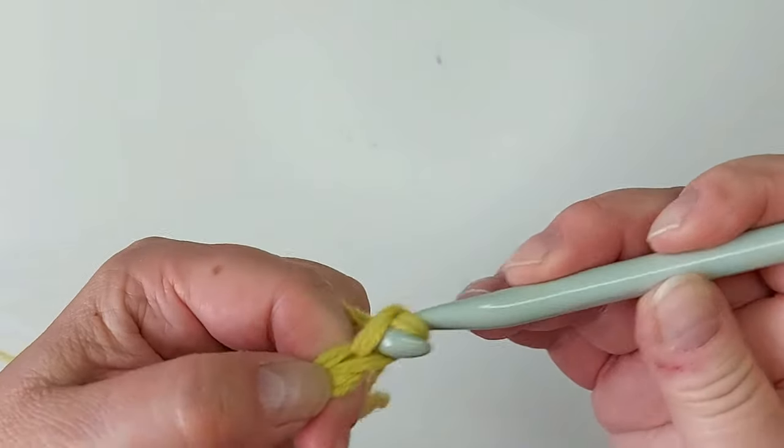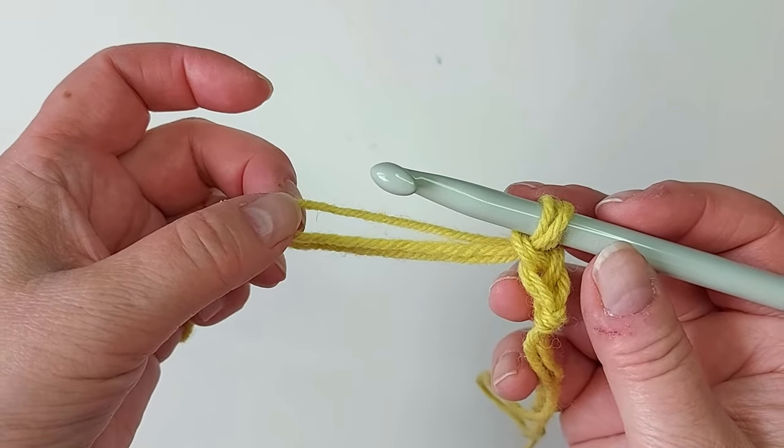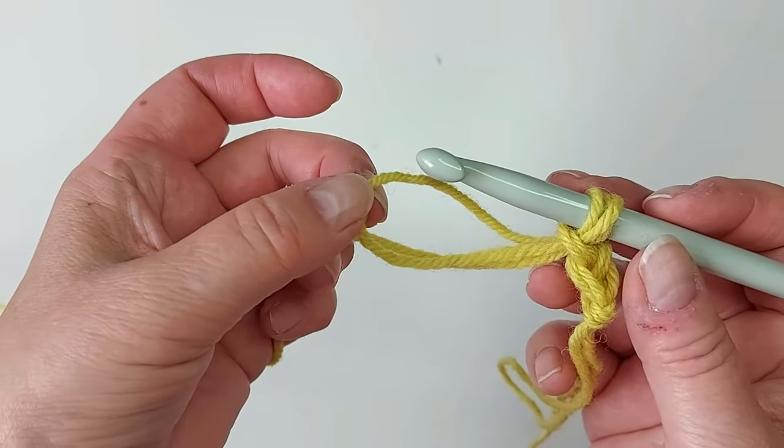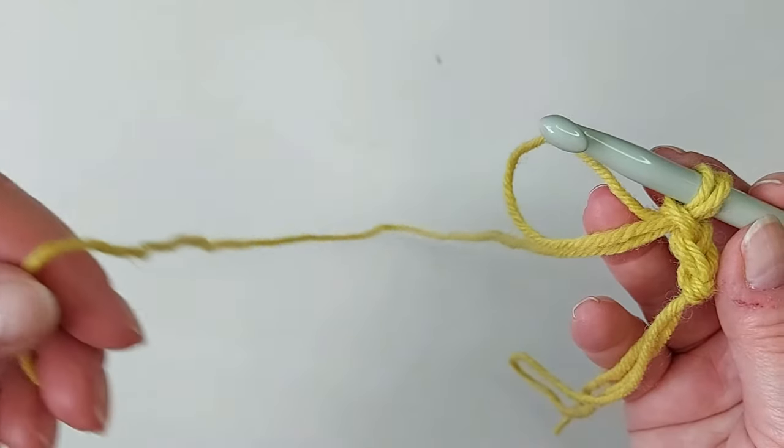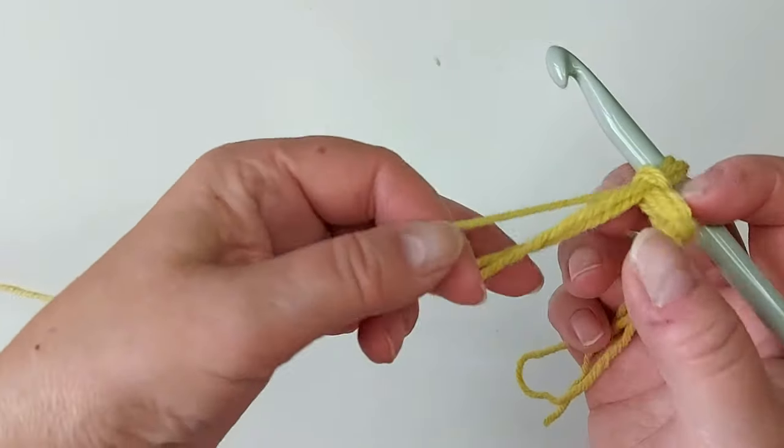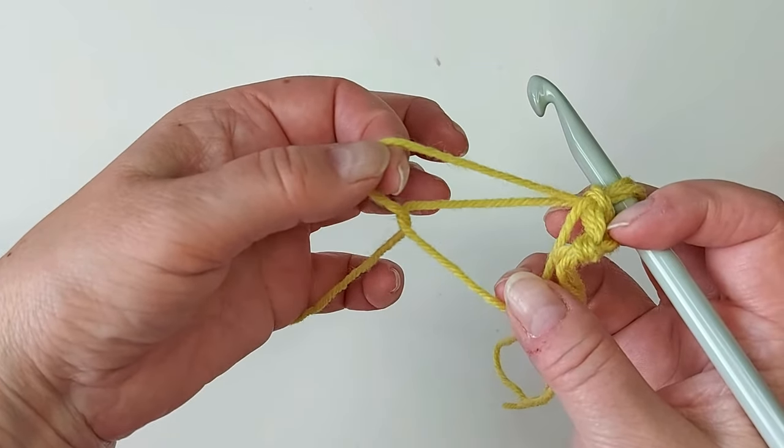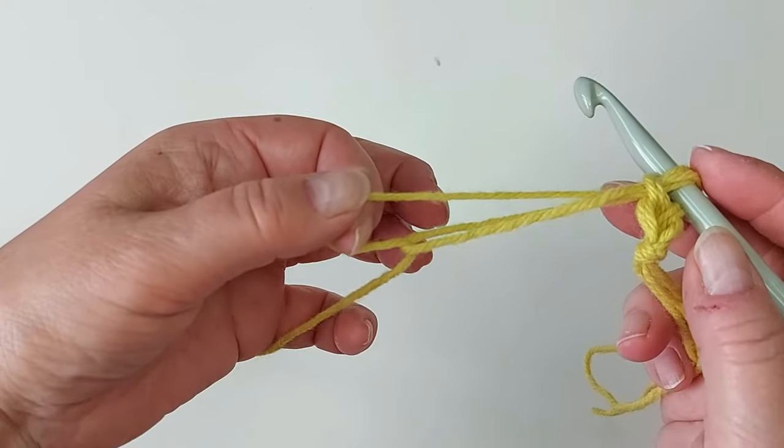Just start to crochet until, depending on how long your loops were, you come to this loop and you have your working yarn here. What you do is you put the working yarn through the loop like this and you pull.